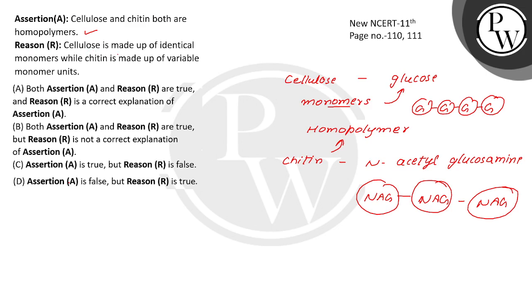The reason given states that cellulose is made up of identical monomers while chitin is made up of variable monomer units — so this reason is incorrect. In reality, chitin is also made up of identical monomers, and cellulose is also made up of identical monomers. Here the monomer is glucose, and there the monomer is N-acetyl glucosamine. So the reason is false, and option C is correct.